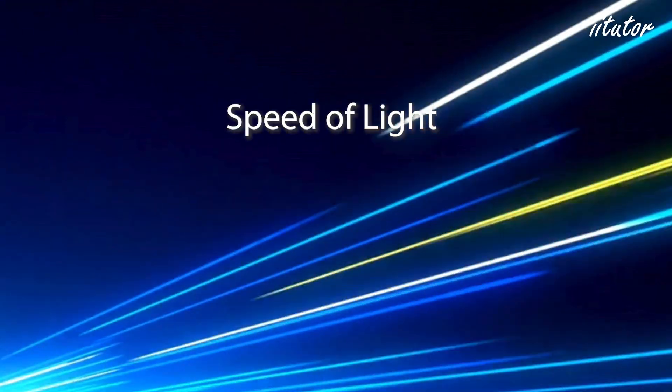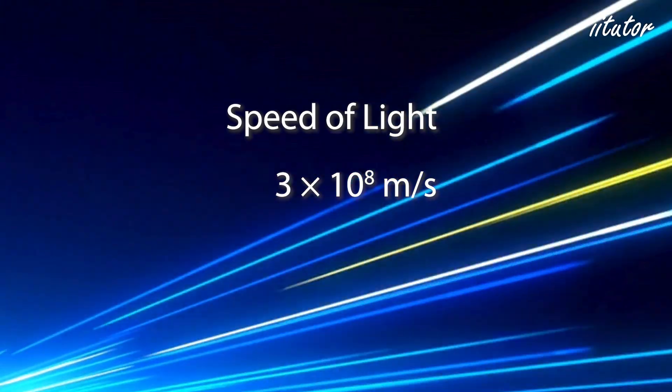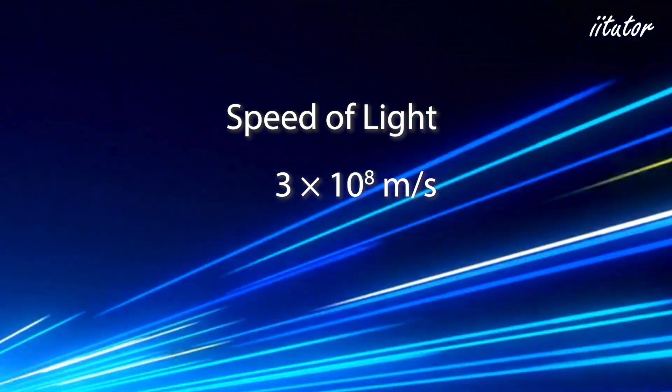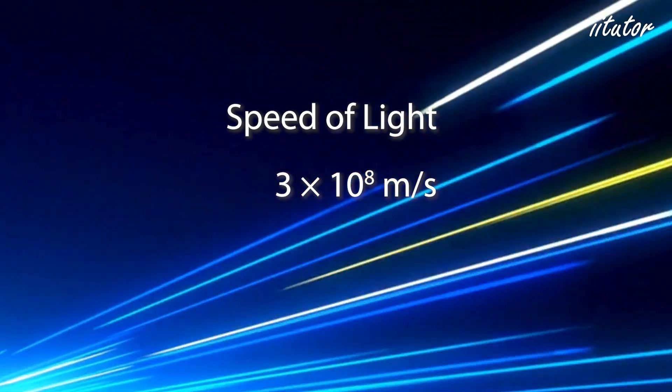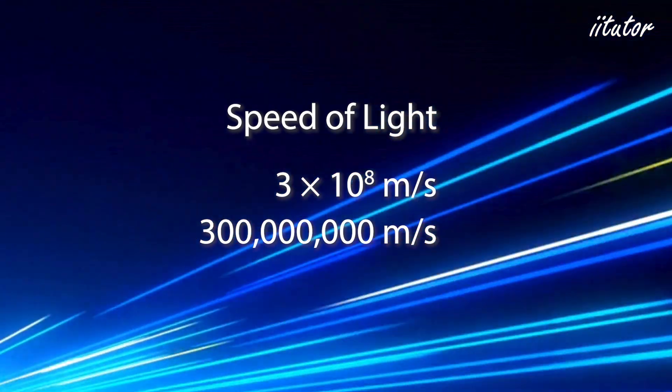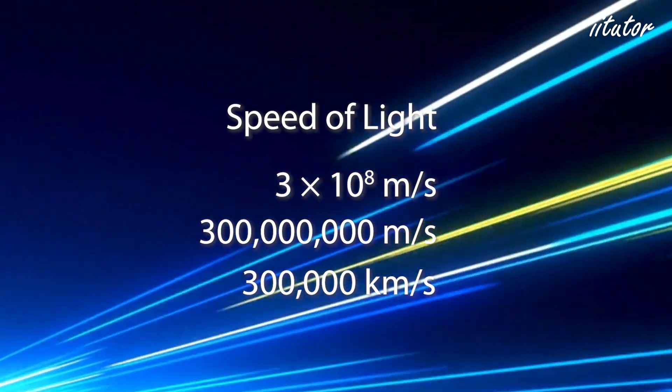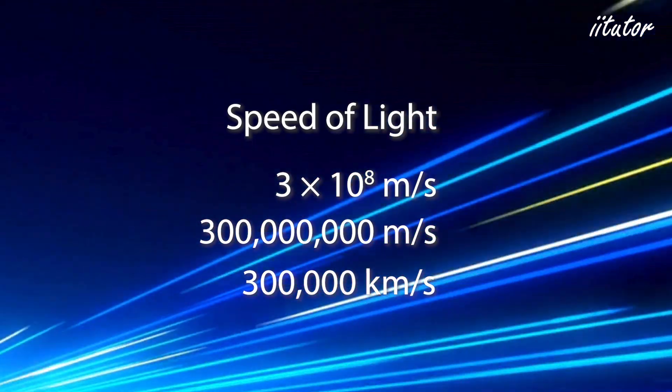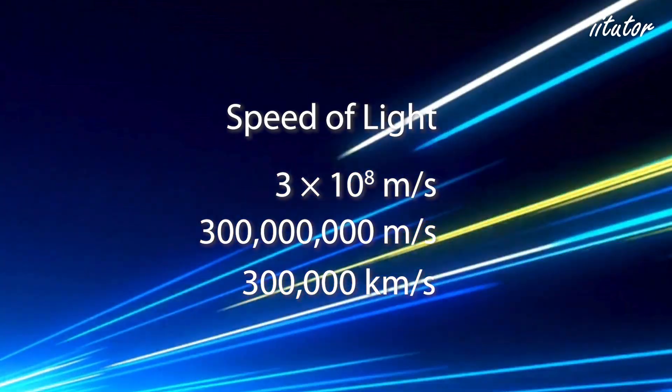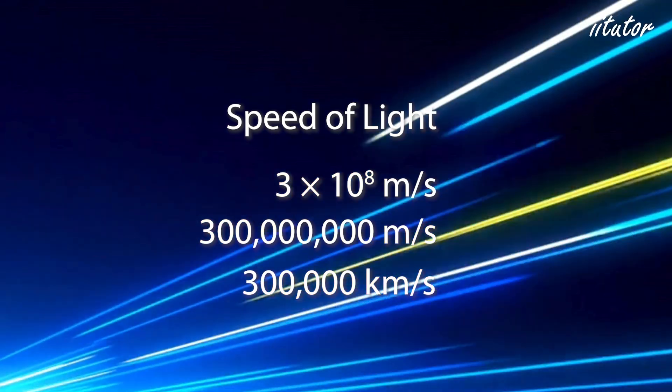So the speed of light or of any electromagnetic wave is this number here 3 times 10 to the 8 meters per second. Now because this is in scientific notation it's sort of a difficult number to visualize. So there are other ways that we can think of this number. We can say it's 300 million meters per second or we could say it's 300,000 kilometers per second. When you think of how far one kilometer is, it makes you realize that light must be traveling very fast indeed if it can travel 300,000 kilometers in a single second.